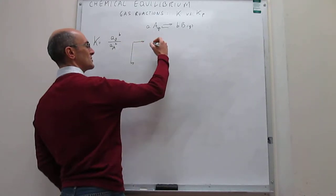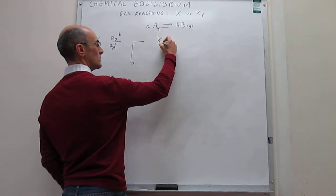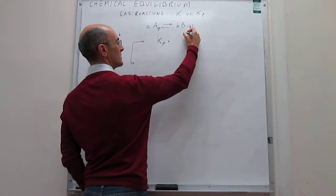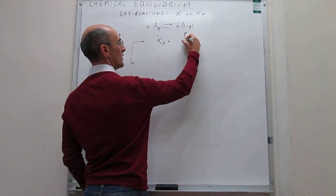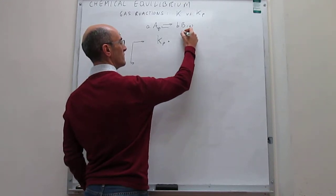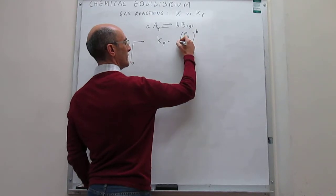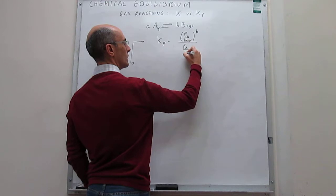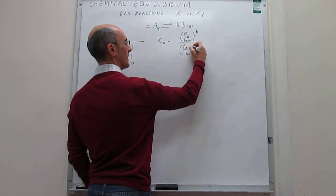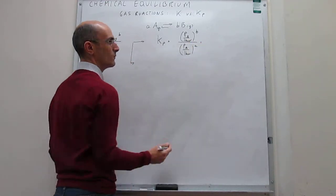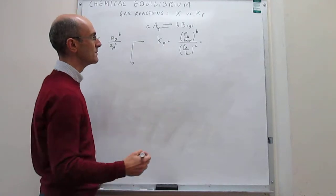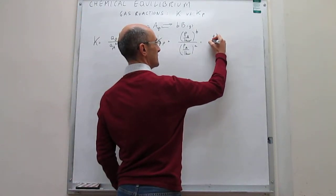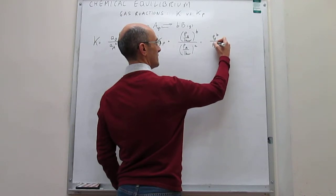The first one uses partial pressures and is usually called K sub p. That would be simply the partial pressure of B over the reference pressure of one bar, to the power of b, divided by the partial pressure of A over one bar, to the power of a — simplified as p_B^b over p_A^a.